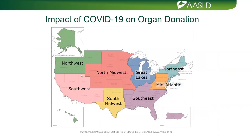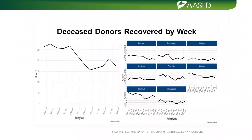In the U.S., the UNOS OPTN website on COVID-19 divides the country into regions, most notably the Northeast combining New York and New England. Deceased donors declined from early March, dropping about 50% by the third week of March, with some recovery to about a 25% drop. The biggest drops were in hardest-hit regions like the Northeast, while other areas like the Mid-Atlantic and Texas/Oklahoma/Southwest were able to continue transplants at near-normal rates.